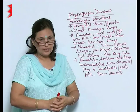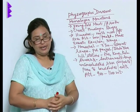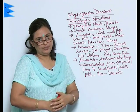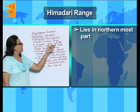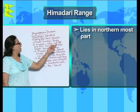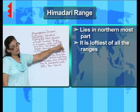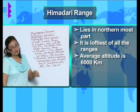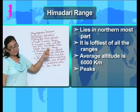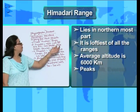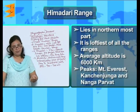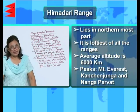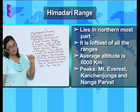There are three Himalayan ranges, and let's see their characteristics one by one. The first one is the Himadri range. The Himadri range lies in the northernmost part and it is the loftiest of all the ranges. The average altitude is somewhere around 6000 meters, and the peaks of this range include Mount Everest, Kanchenjunga, and Nanga Parbat — all the loftiest peaks are located in this range.